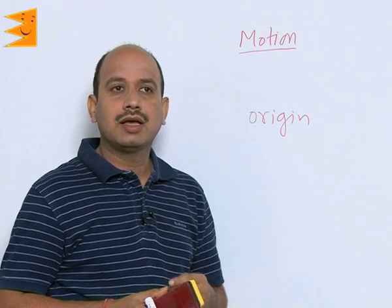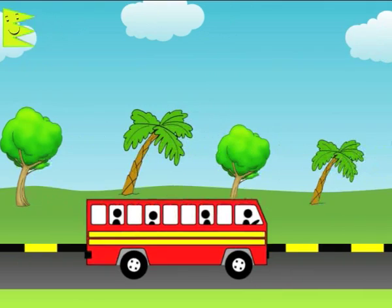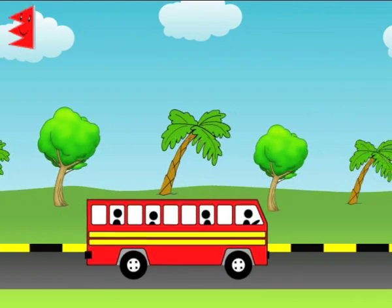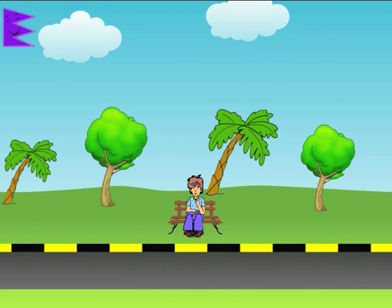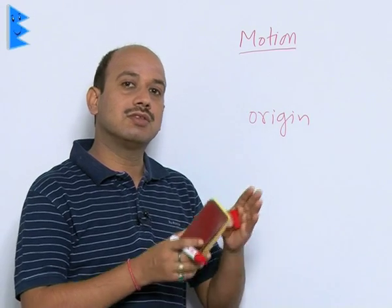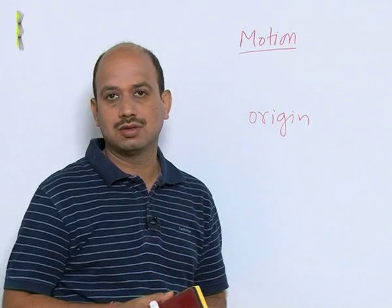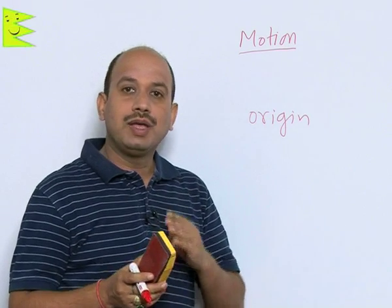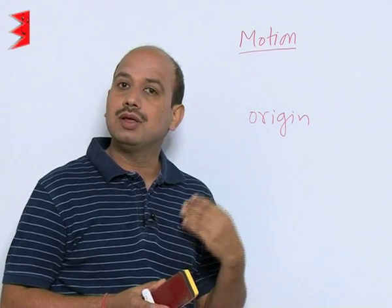Another example: a person sitting in a moving bus sees trees and plants moving in the opposite direction. But if you are standing on the ground and observe the position of the trees and plants, you will find they are at rest. So the same tree is in motion for the person sitting inside the bus, but at rest for the person standing on the earth. This is why we study relative motion — because you cannot say any object is absolutely at rest.